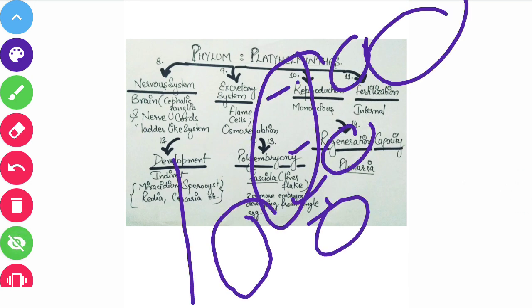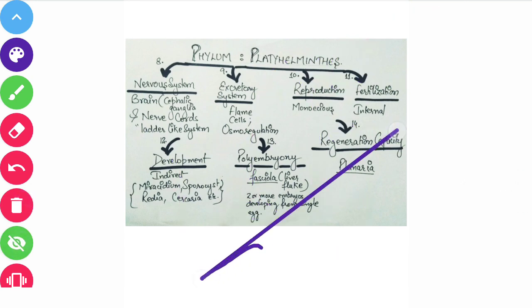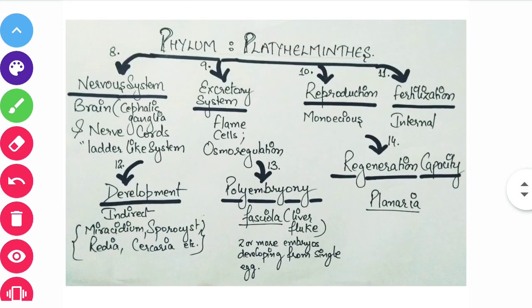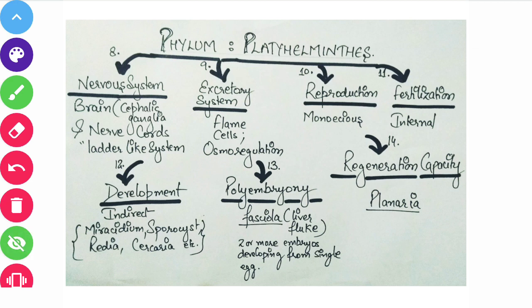Another characteristic is polyembryony — also a unique characteristic for this phylum. Polyembryony means two or more embryos develop from a single fertilized egg. One single fertilized egg gives rise to two or more embryos. This is a very important characteristic of Fasciola hepatica.